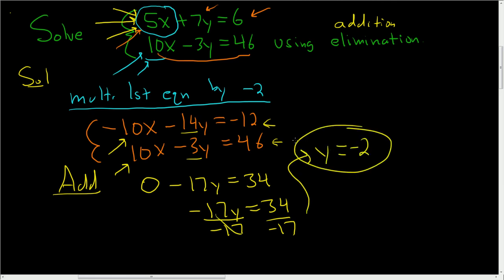OK, now we can use any equation we want to solve for y. It looks like they're both equally difficult. So let's maybe take the first equation, this one here, and plug in y equals negative 2. So 5x plus 7y equals 6.